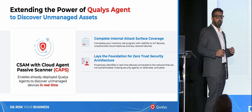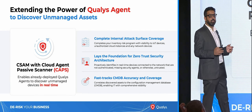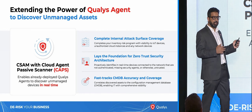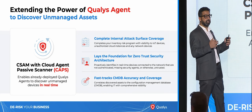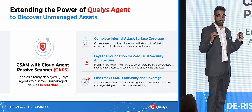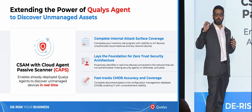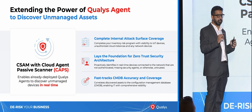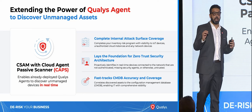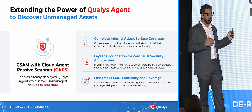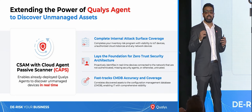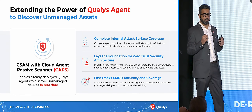The same Qualys Cloud Agent, which is already deployed in your environment and which you have been using for vulnerability management, policy compliance, patch, and other use cases, can now be extended for passive sensing as well. You do not need to worry about the network topology or where to put the taps. Qualys Cloud Agent has inbuilt intelligence where we will automatically detect the leader node, and it will start doing passive sensing in each broadcast or multicast domain.